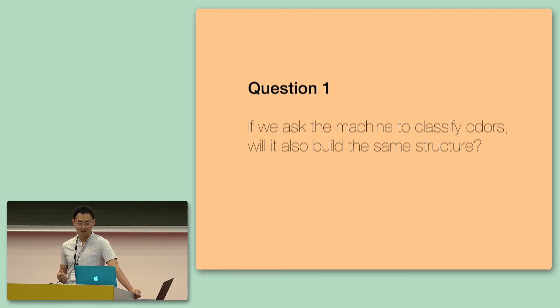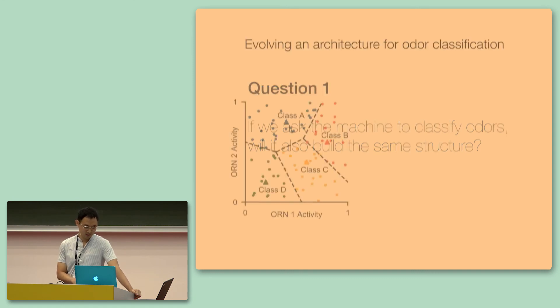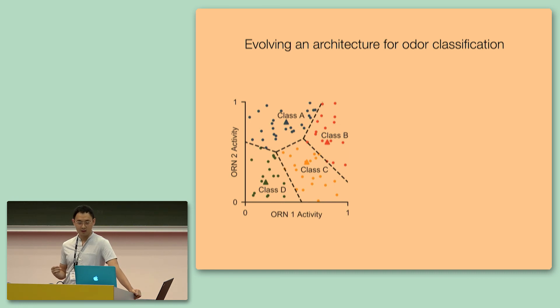So the first question that we want to ask is, if we ask a machine to classify odors, will it also build the same structure? And we use a very simple olfactory classification task that we believe resembles the essence of what flies have to do, which is associate any odor in its environment with any possible outcome. So, in this simple task, we simply give the network a million different odors. Every odor activates a set of 50 olfactory receptor neurons and its activation determines which class it should belong to. And that's it.